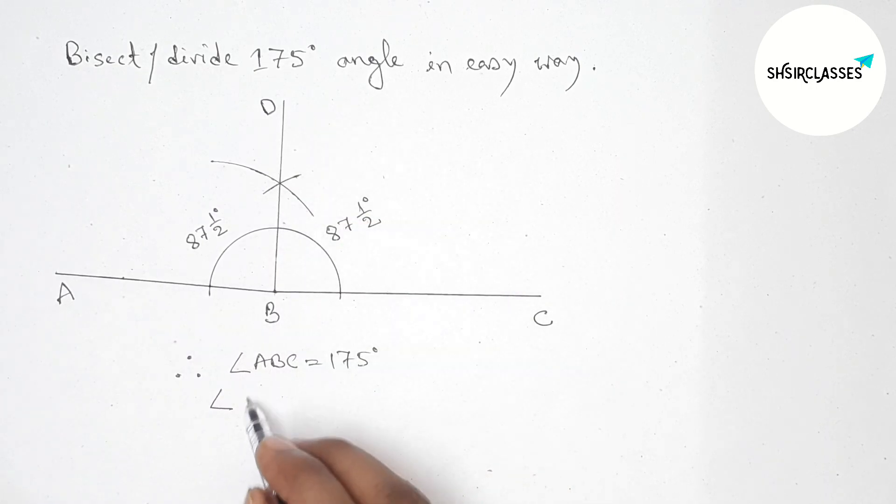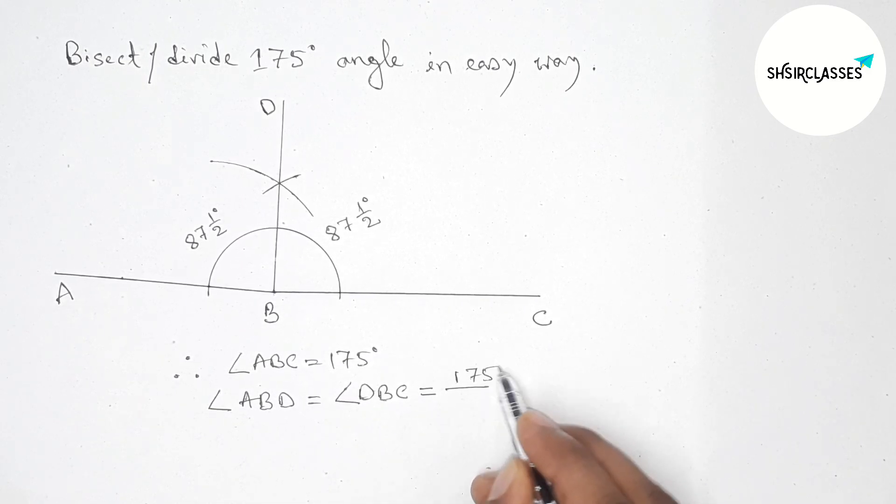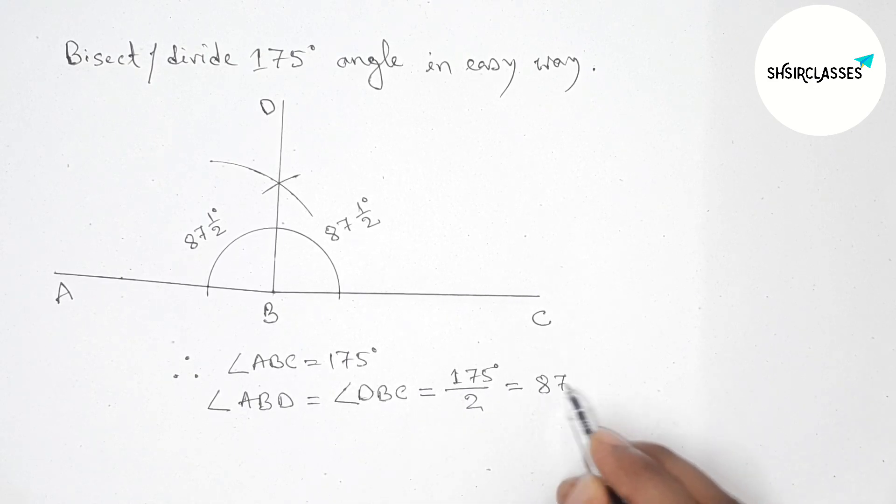And angle ABD equals angle DBC, both are equal. So equals to 175 degree by 2, so dividing, 87 1/2 degree. That's all, thanks for watching, please share it with your friends.